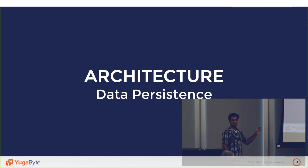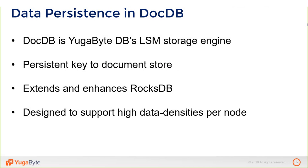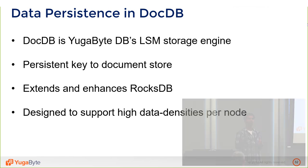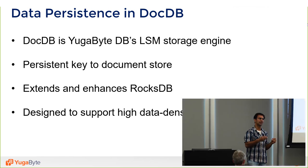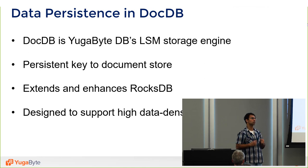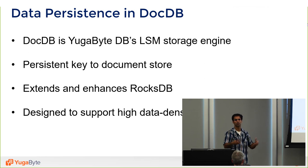Now, persistence: the way YugaByte stores data at the core — independent of the different API layers — is a document model, as this serves a wide array of use cases. DocDB is the LSM core inside YugaByte. It's a heavily extended and modified version of RocksDB that offers a document view on top of data. RocksDB is a single-node key-value store; DocDB makes it a key-to-document store, and with Raft on top, it becomes a distributed, consistent key-to-document store.